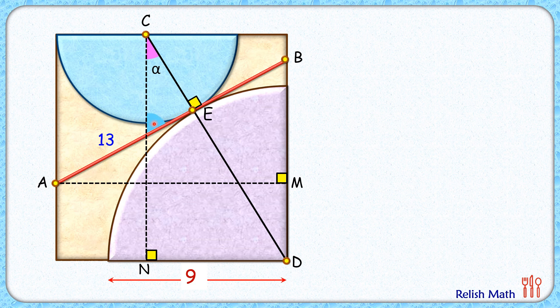So here this blue angle will be 90 minus alpha, and by vertically opposite angle this angle will also be 90 minus alpha. This is 90 degrees, so we can say that this angle here is alpha degrees.